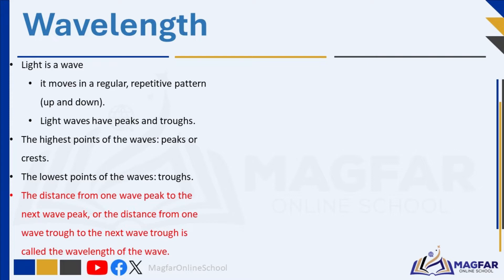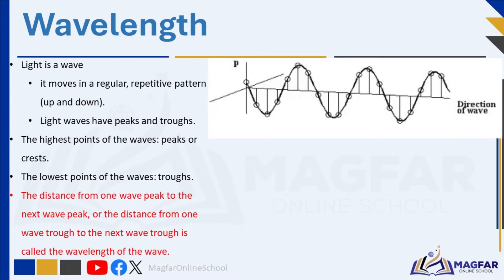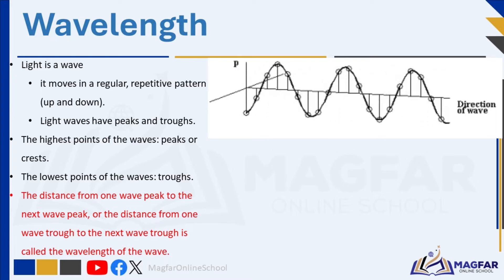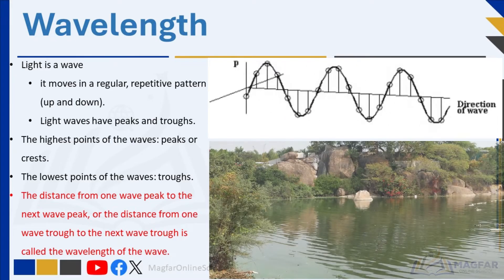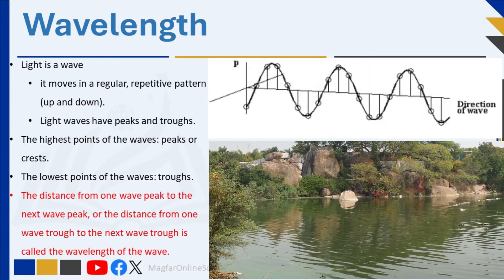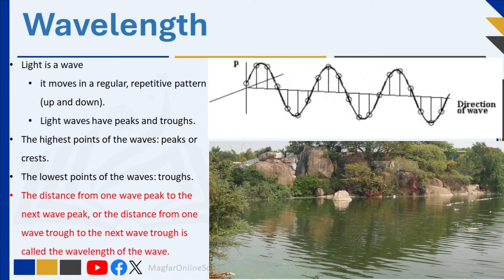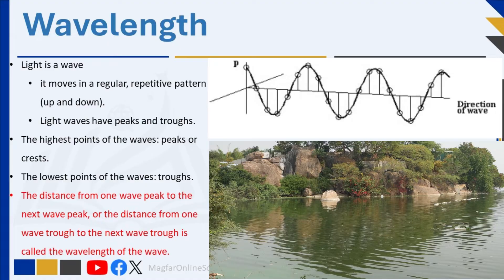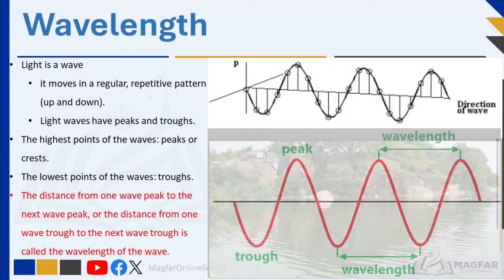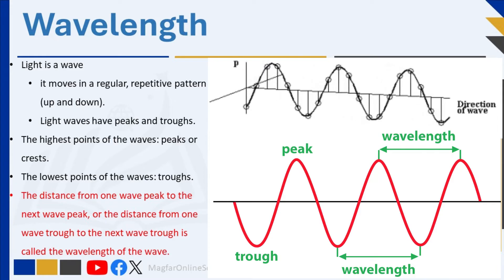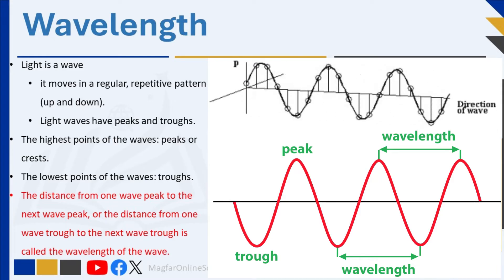Light is called a wave because when it travels, it moves in a regular repetitive pattern up and down. Water waves form a similar pattern, but unlike water, we cannot see the pattern that light creates. Each of the different colors of visible light has a characteristic wave. Some colors have long waves, such as red light, and some colors have short waves, such as blue light. However, all light waves travel at the same speed.